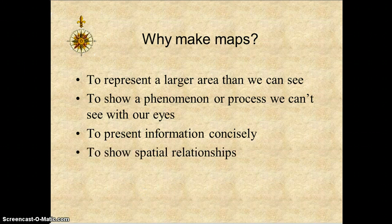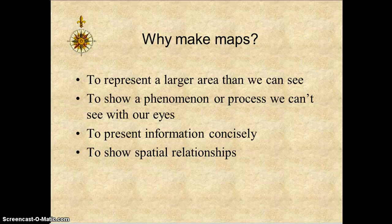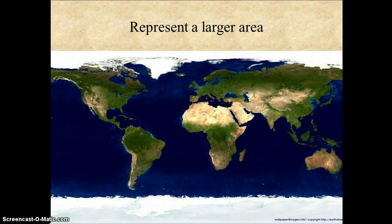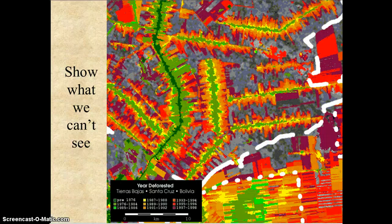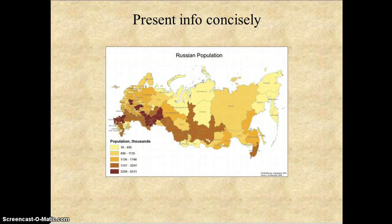Why are we making maps? To represent a larger area than we can see, and to present information concisely for those that have not seen it before. Maps are used to represent a larger area as seen in this map. They also can show us what we cannot see — this map is depicting deforestation. It also presents a vast amount of different information, especially population.